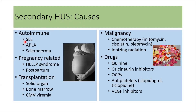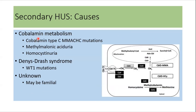Secondary HUS occurs in autoimmune diseases like SLE, APLA, and scleroderma. It can be pregnancy-related in HELLP syndrome and the postpartum period. It can occur after solid organ or bone marrow transplantation, and in malignancy after use of chemotherapy like mitomycin, cisplatin, or bleomycin, or secondary to ionizing radiation. Drugs like quinine, calcineurin inhibitors, OCPs, and antiplatelets like clopidogrel and ticlopidine can also cause secondary HUS. It is also associated with cobalamin metabolism disorders like methylmalonic aciduria and homocystinuria, and can occur in Denys-Drash syndrome, and rarely can be familial.